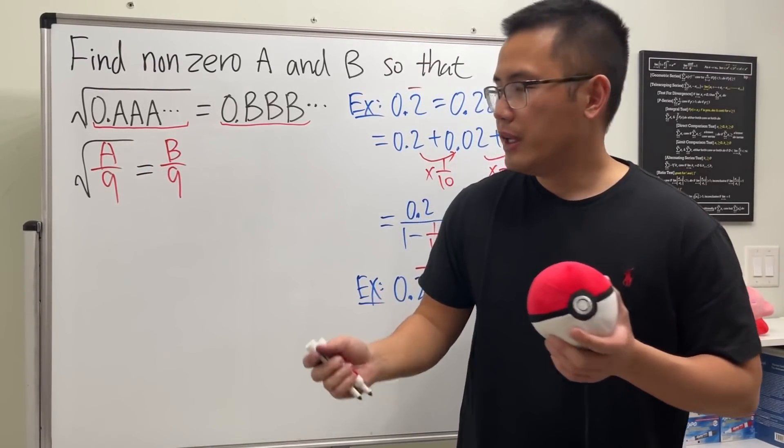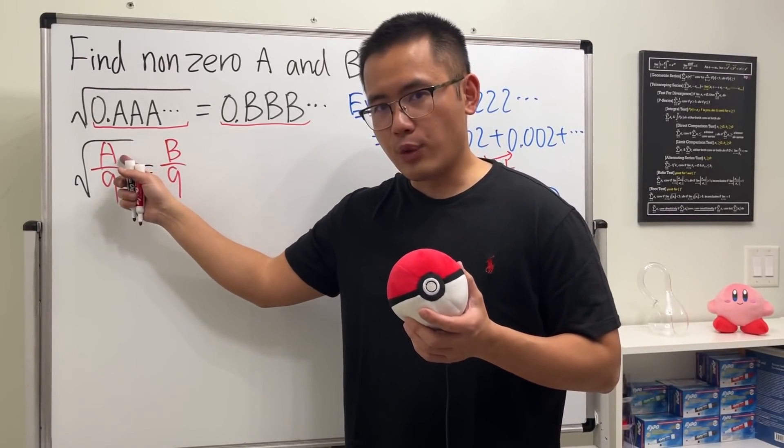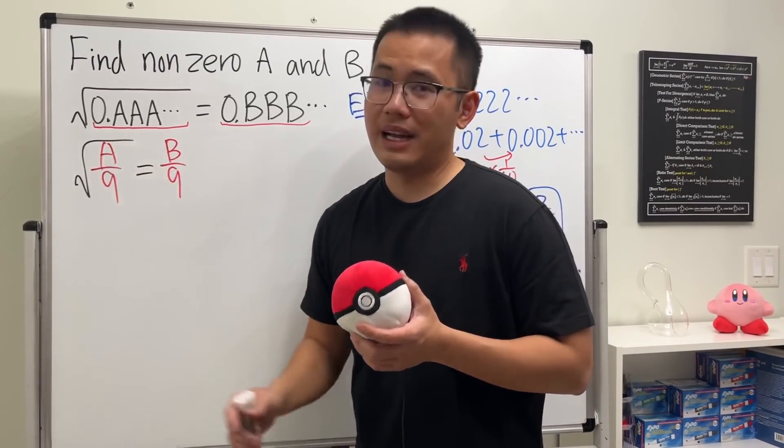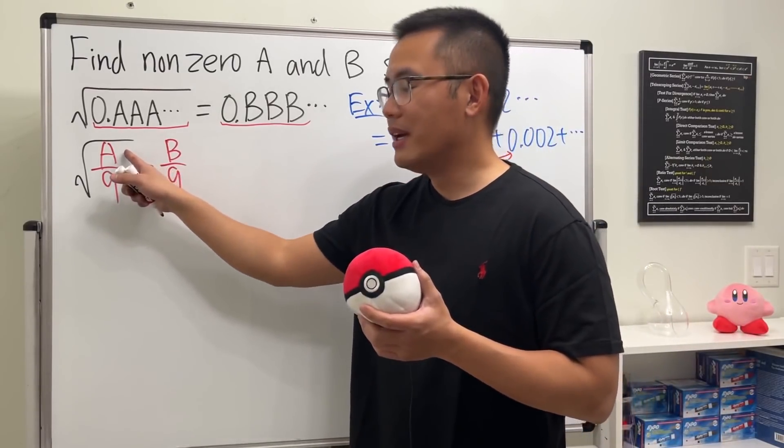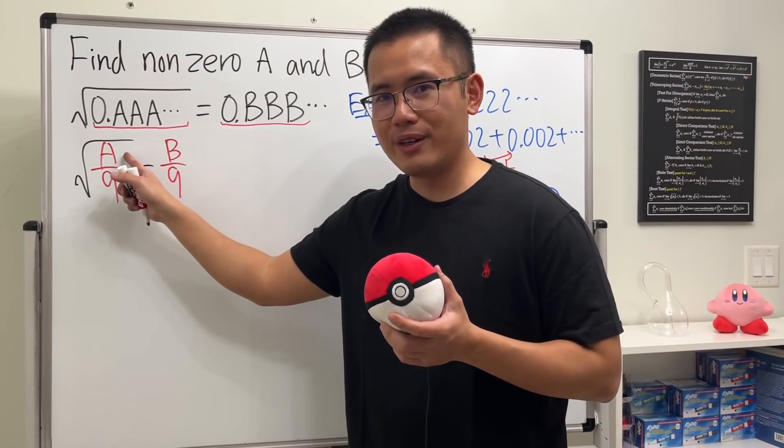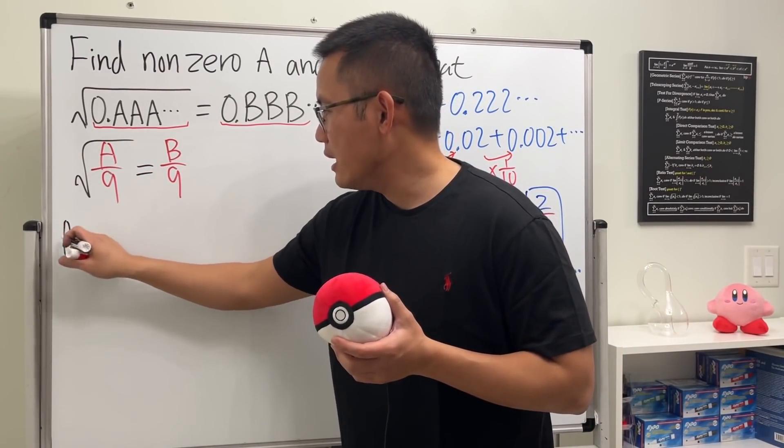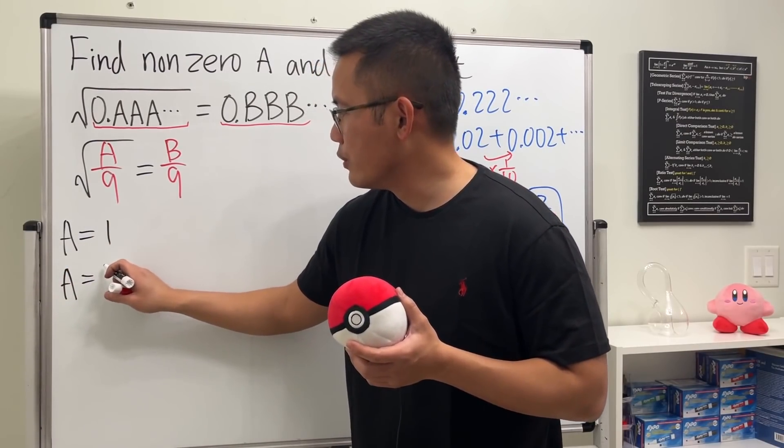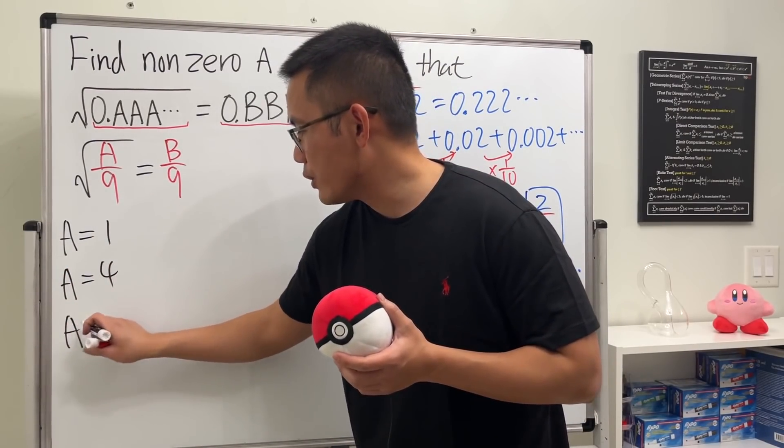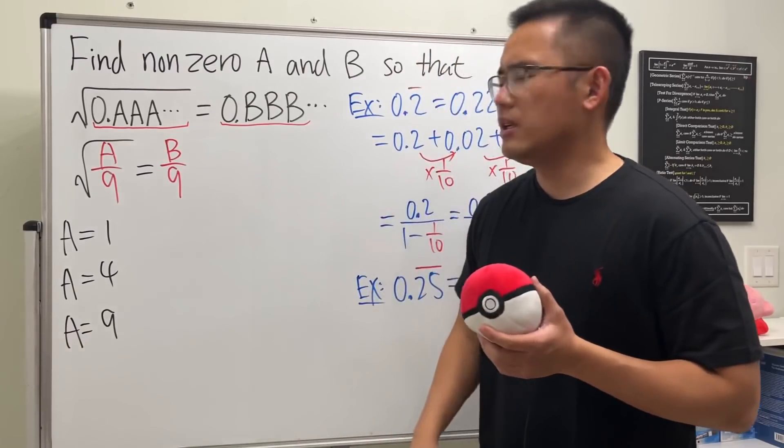Let's think about the possibilities for A. If A is not a perfect square, the square root will be irrational. So A has to be a single-digit perfect square, meaning A equals 1, or 4, or 9.